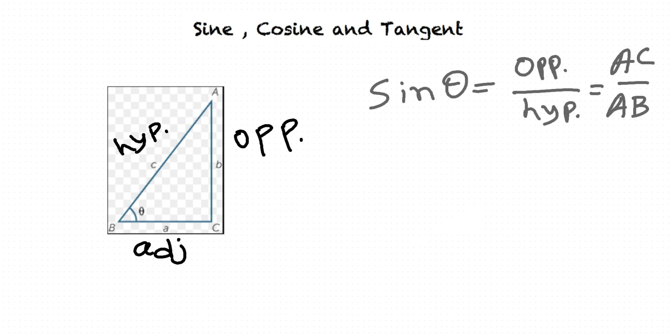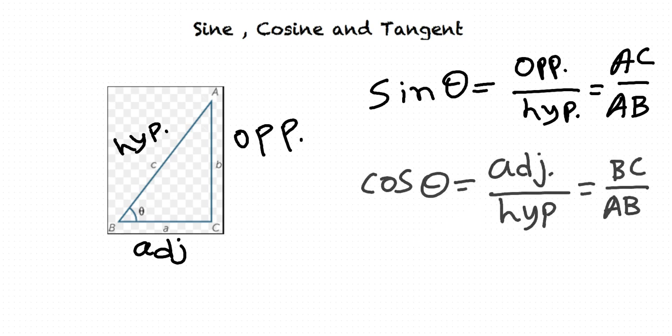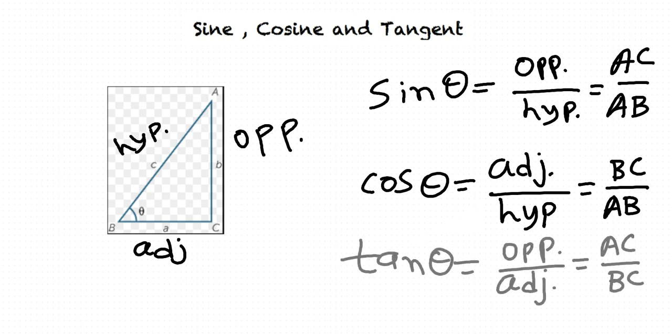Sine theta is equal to opposite side divided by hypotenuse, which is equal to AC divided by AB. Cos theta is defined as adjacent side divided by hypotenuse, which is equal to BC divided by AB. Tan theta is defined as opposite side divided by adjacent side, so it is equal to AC divided by BC.